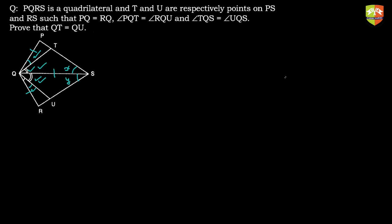So the strategy is clear. Let me remove all those marks and summarize: the strategy is to first prove that triangles PQS and RQS are congruent. Hence angle PSQ equals angle RSQ. Then prove that triangles TQS and UQS are congruent. Hence QT equals QU. Before you start solving, you should spend some time thinking about how to approach the problem.